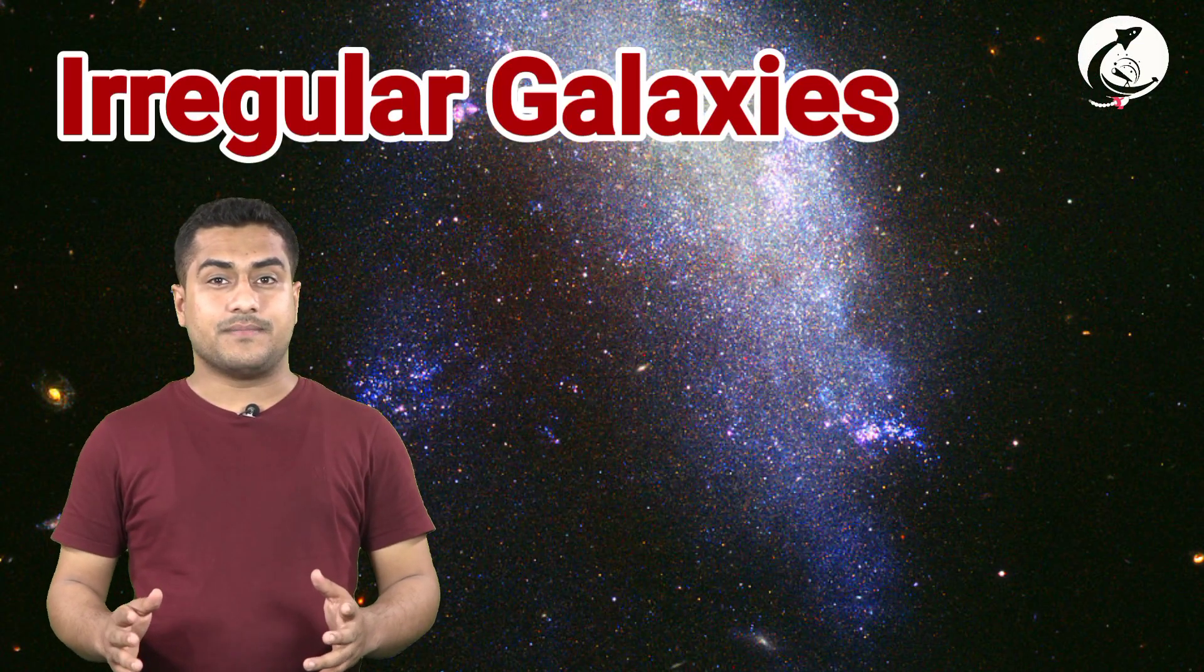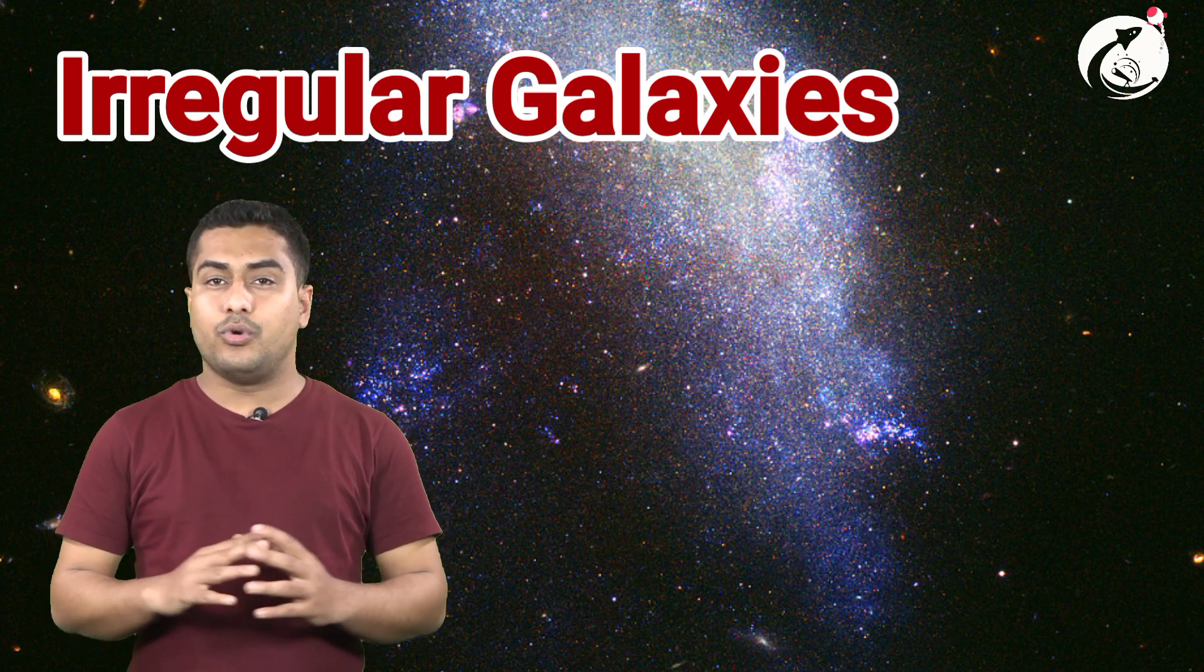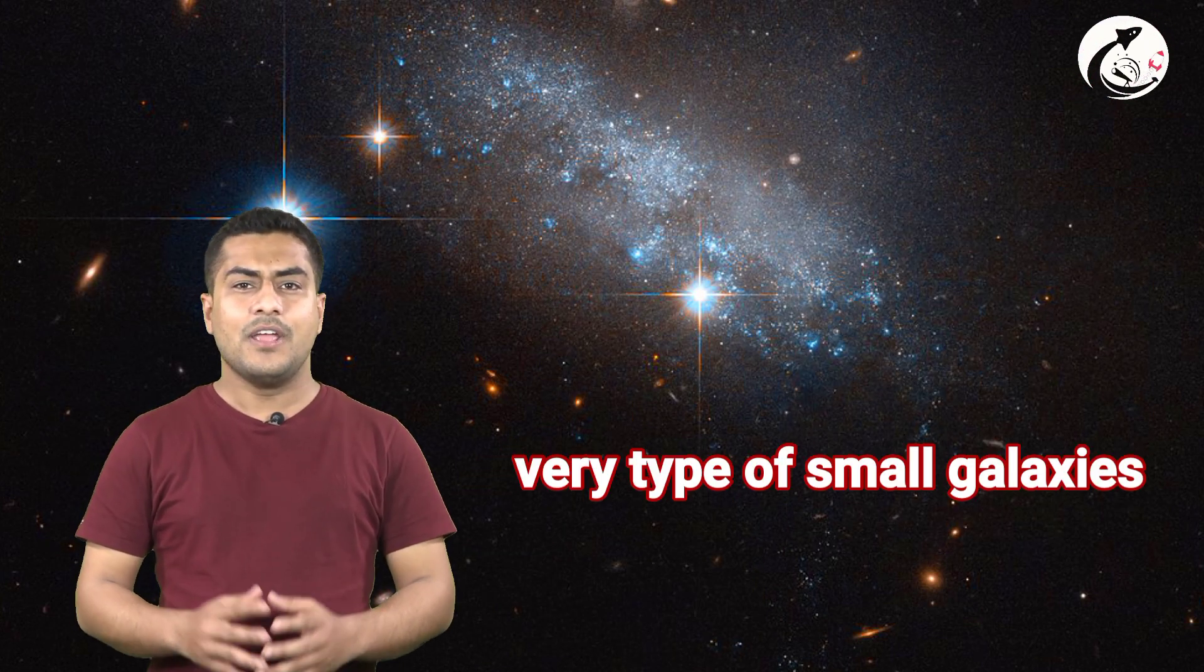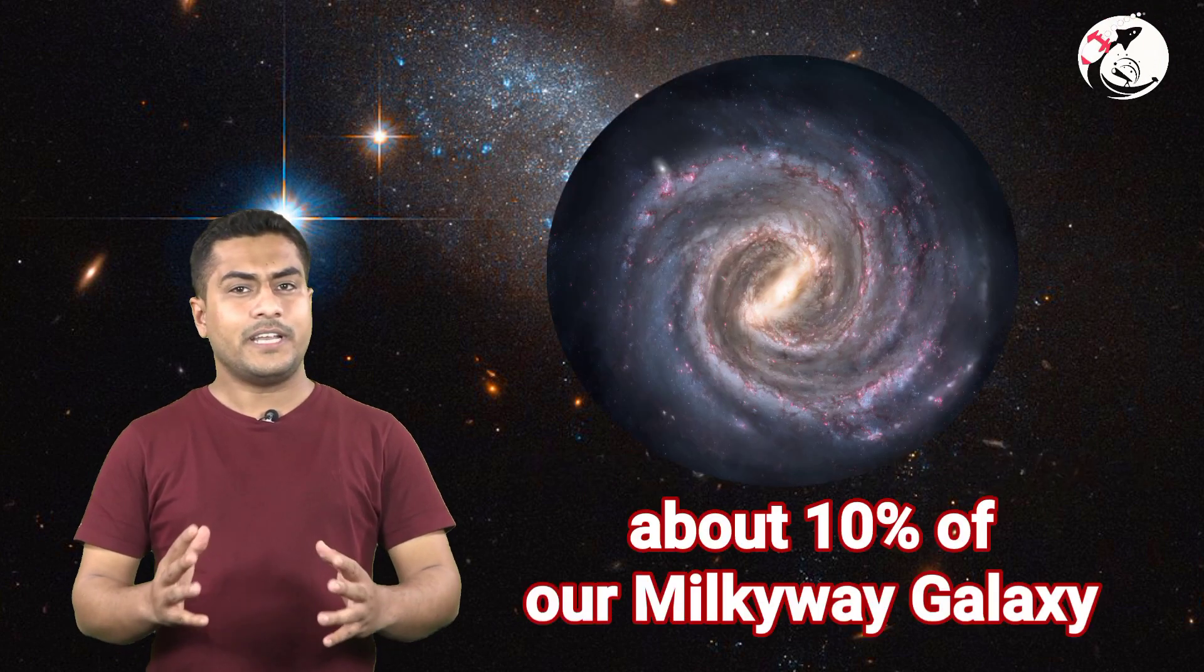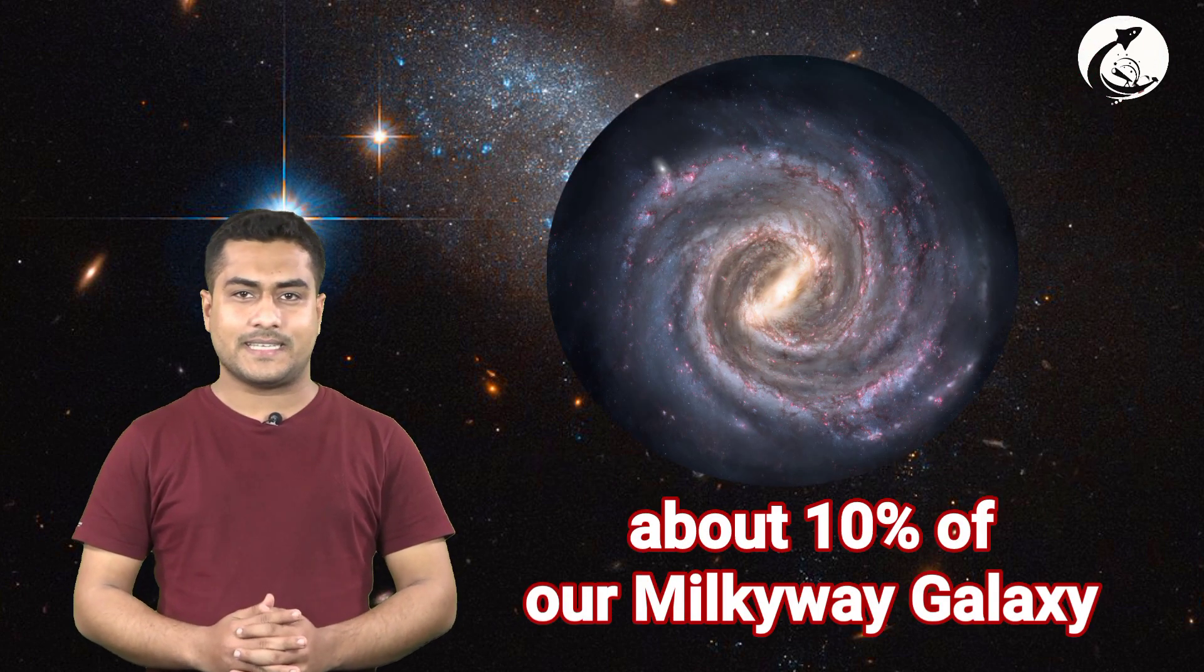Irregular galaxies have no fixed shape. They don't look like a spiral galaxy nor they look like elliptical galaxies. These type of galaxies are very small, about 10% of our Milky Way galaxy. But this type of galaxy contains large numbers of gas and dust which makes up a young star within the galaxy. Also, such type of galaxy contains old, dying stars.